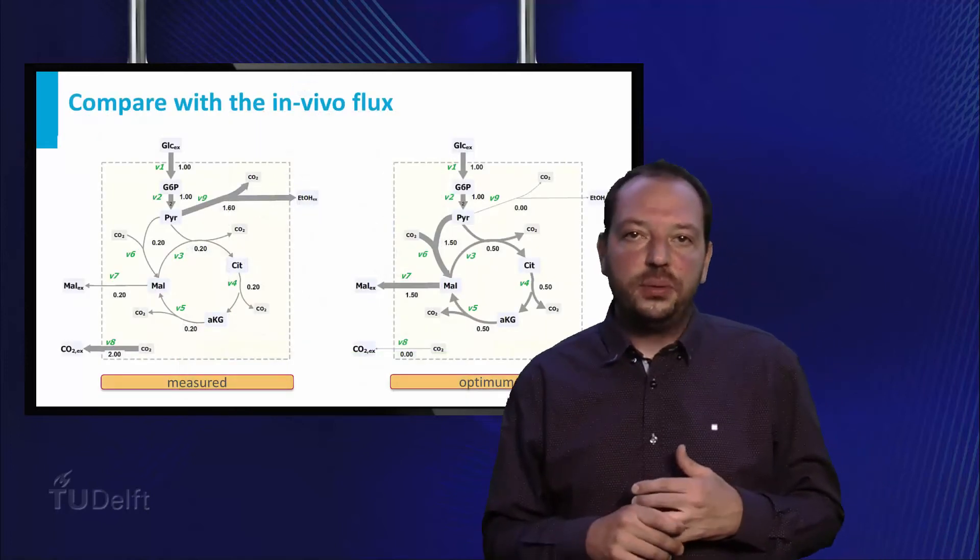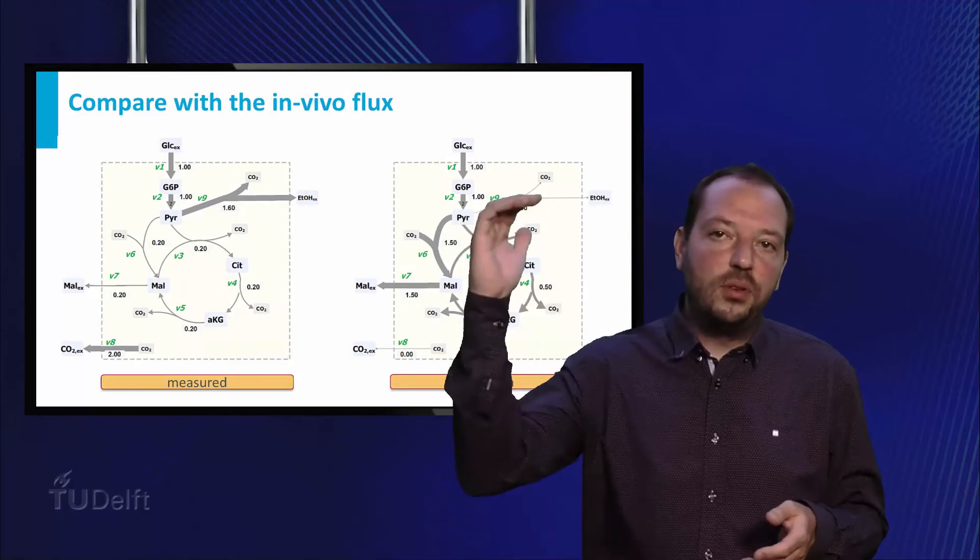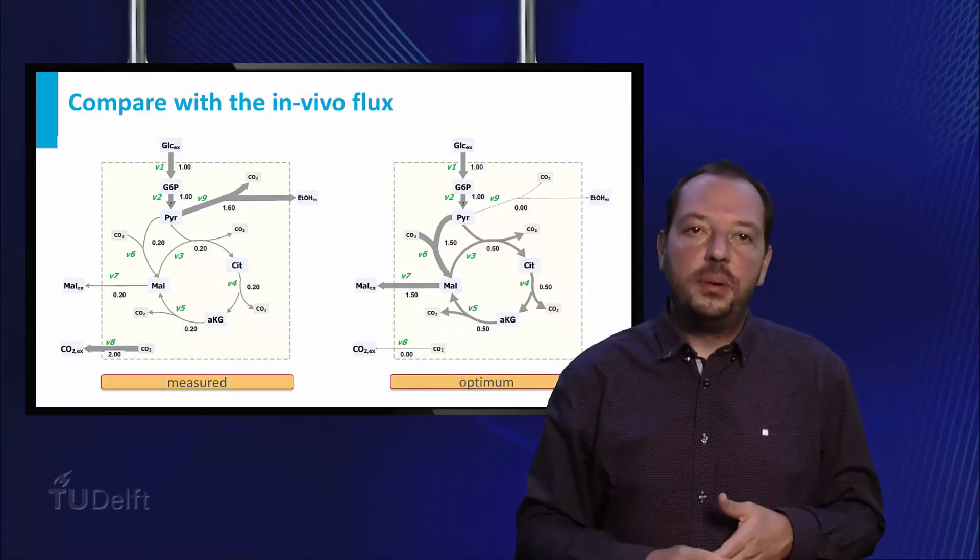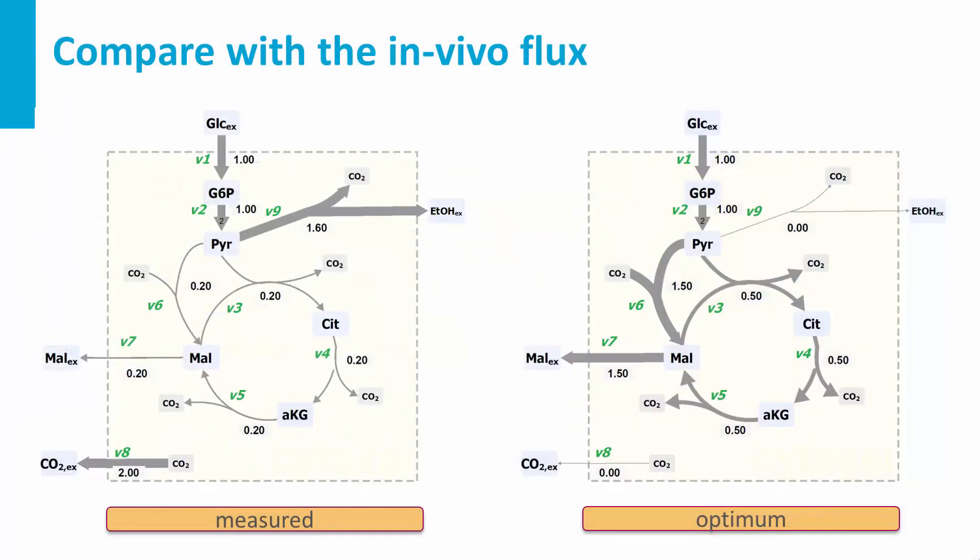Analysis of the first mutant has shown this flux distribution. Instead of reaching the optimum of 1.5 malate per glucose, only 0.2 are reached. Instead of malate, we obtain a significant amount of CO2 and also ethanol.